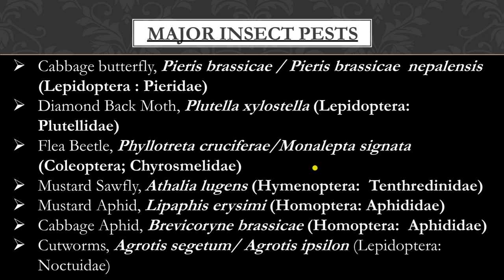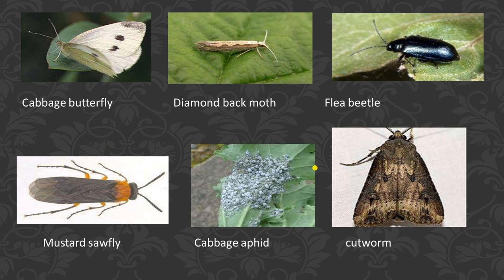Cruciferous crops include cabbage, broccoli, cauliflower, etc. The major pests are cabbage butterfly, diamondback moth, flea beetle, mustard sawfly, mustard aphid, cabbage aphid, and cutworm, which you can see in the diagram.